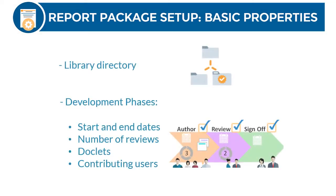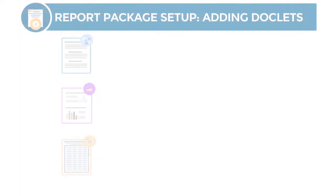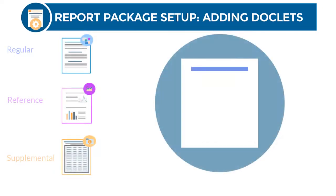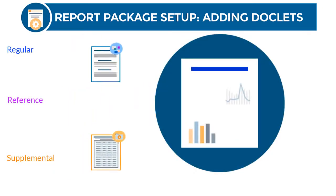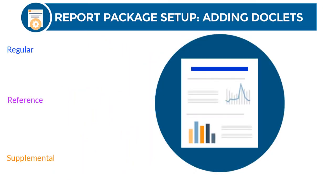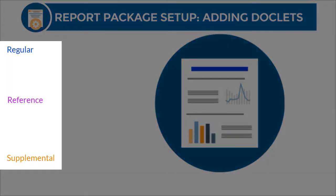Next, specify the library directory to store the report package, and then specify the development phases to use, their start and end dates, how many review cycles to have in each phase, the doclets to develop, and the contributing users. Then build the outline and populate the report package with content by creating and organizing three types of doclets.